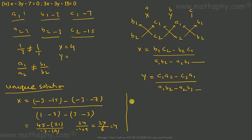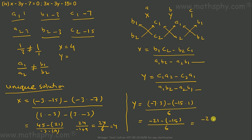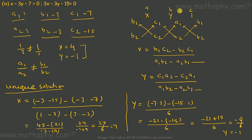Let's find y. Y equals (C1·A2 − C2·A1) over the same denominator of 6. So: (−7 × 3) − (−15 × 1) = −21 + 15 = −6, over 6, which gives negative 1. So y = −1. X is 4 and y is negative 1 — that's the unique solution found through the cross multiplication method.